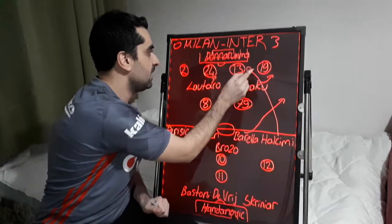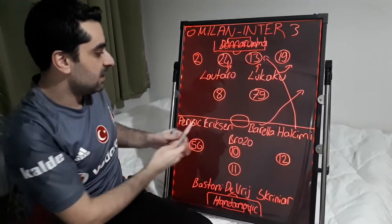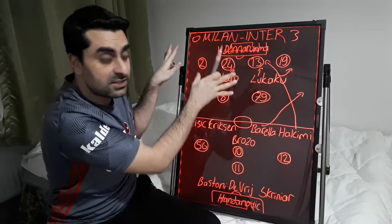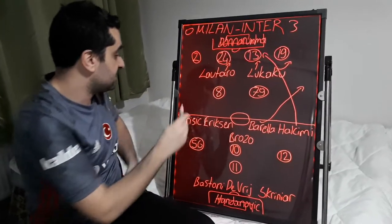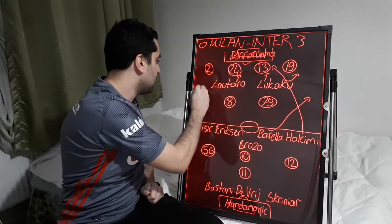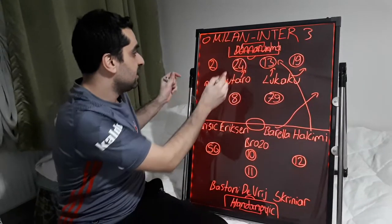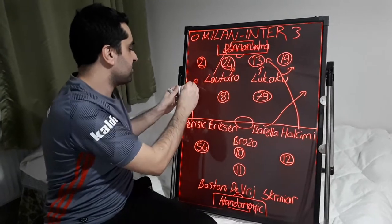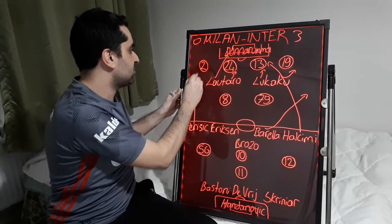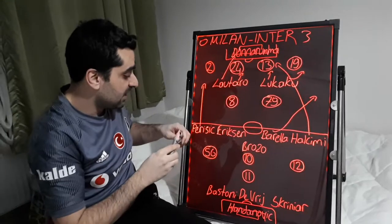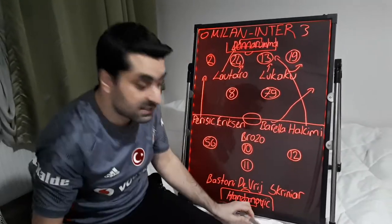Hakimi got into the Milan box. Barella tried to both center into the penalty area. At the same time, Perisic came forward and supported the attacks. Lautaro came to the front post, and Perisic centered the ball into the penalty area. Lautaro found goal positions in Milan's box.